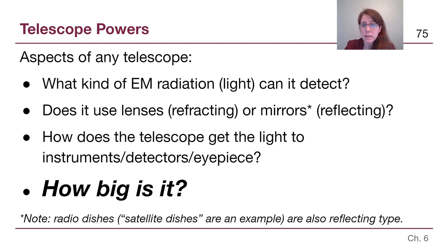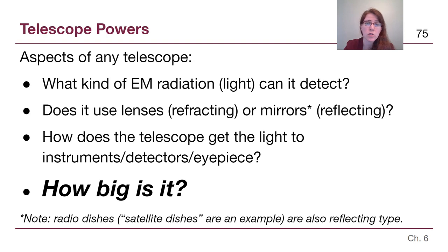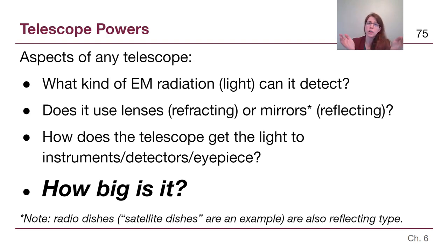We also want to know if it's going to use lenses or mirrors. As we talked about in the previous video, if it's a historic telescope, it's very possible that it is a refracting telescope that uses lenses. But moving forward since the 1900s, we build reflecting telescopes either with mirrors for visible light telescopes or similar wavelengths, or with dishes — radio dishes or satellite dishes — for those long wavelengths, because the overall structure is the same: a curved surface for that type of light to bounce off of.